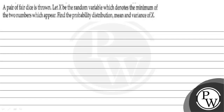Hello. Let's read the given question. The question states that a pair of fair dice is thrown. Let X be the random variable which denotes the minimum of the two numbers which appear. Find the probability distribution, mean, and variance of X.